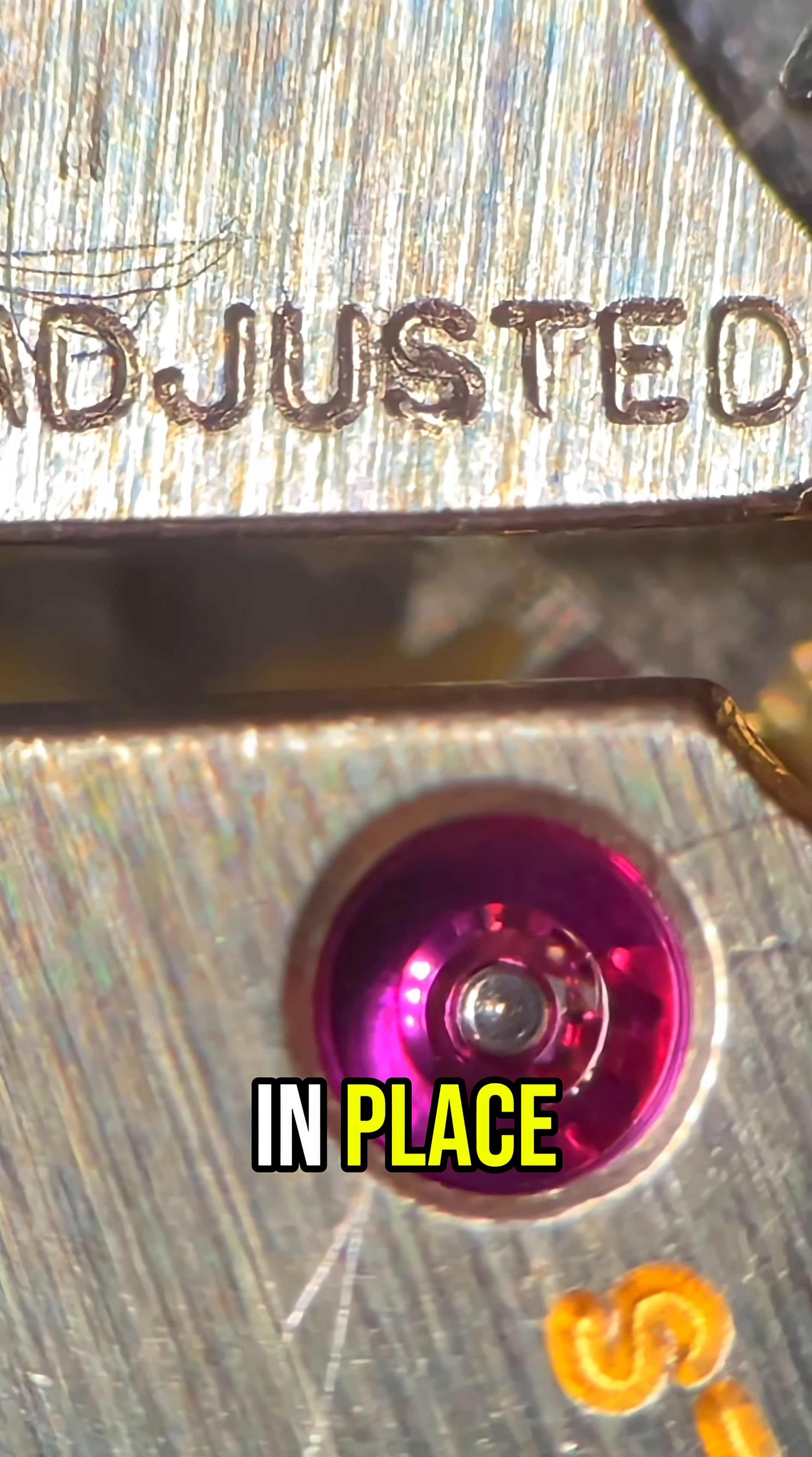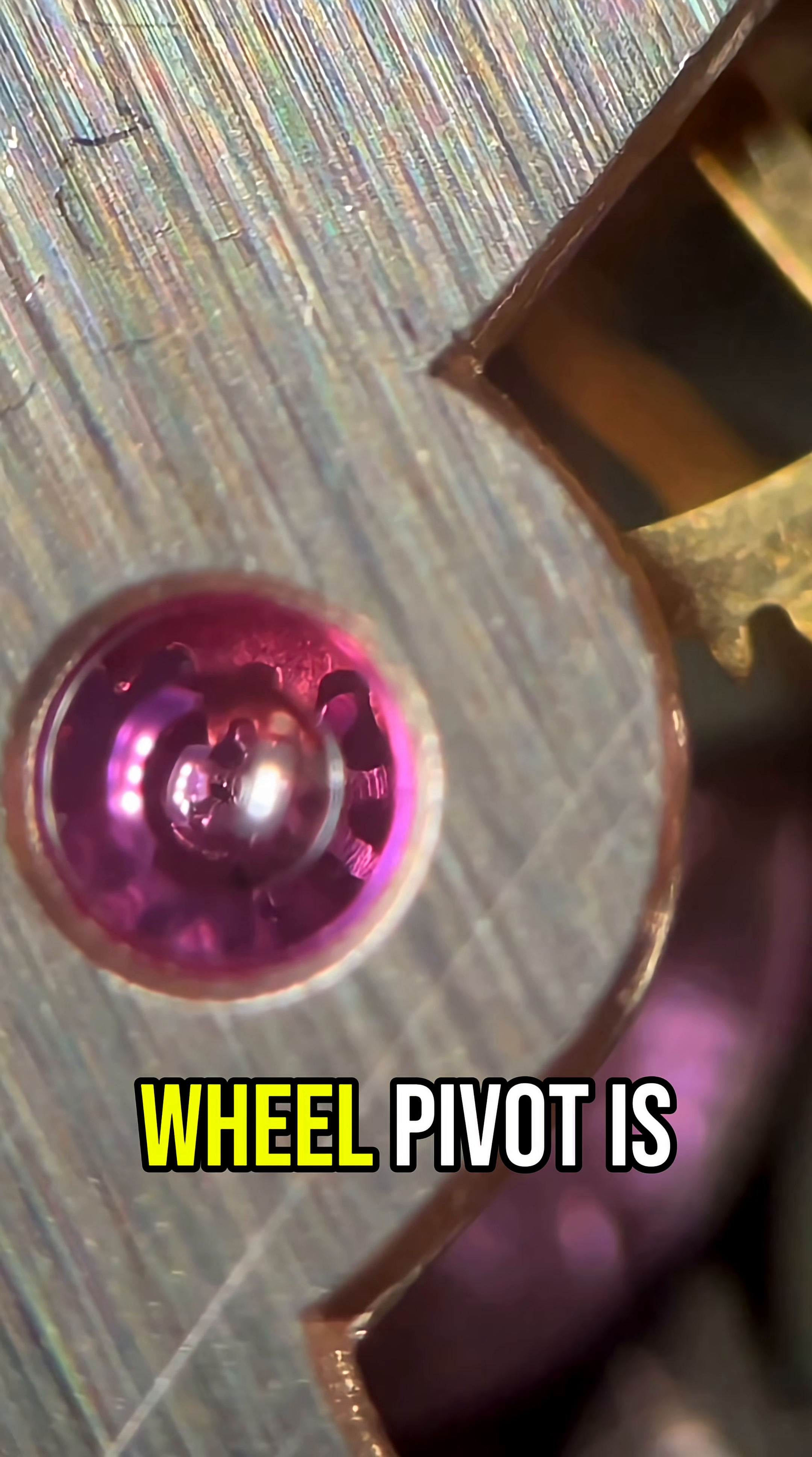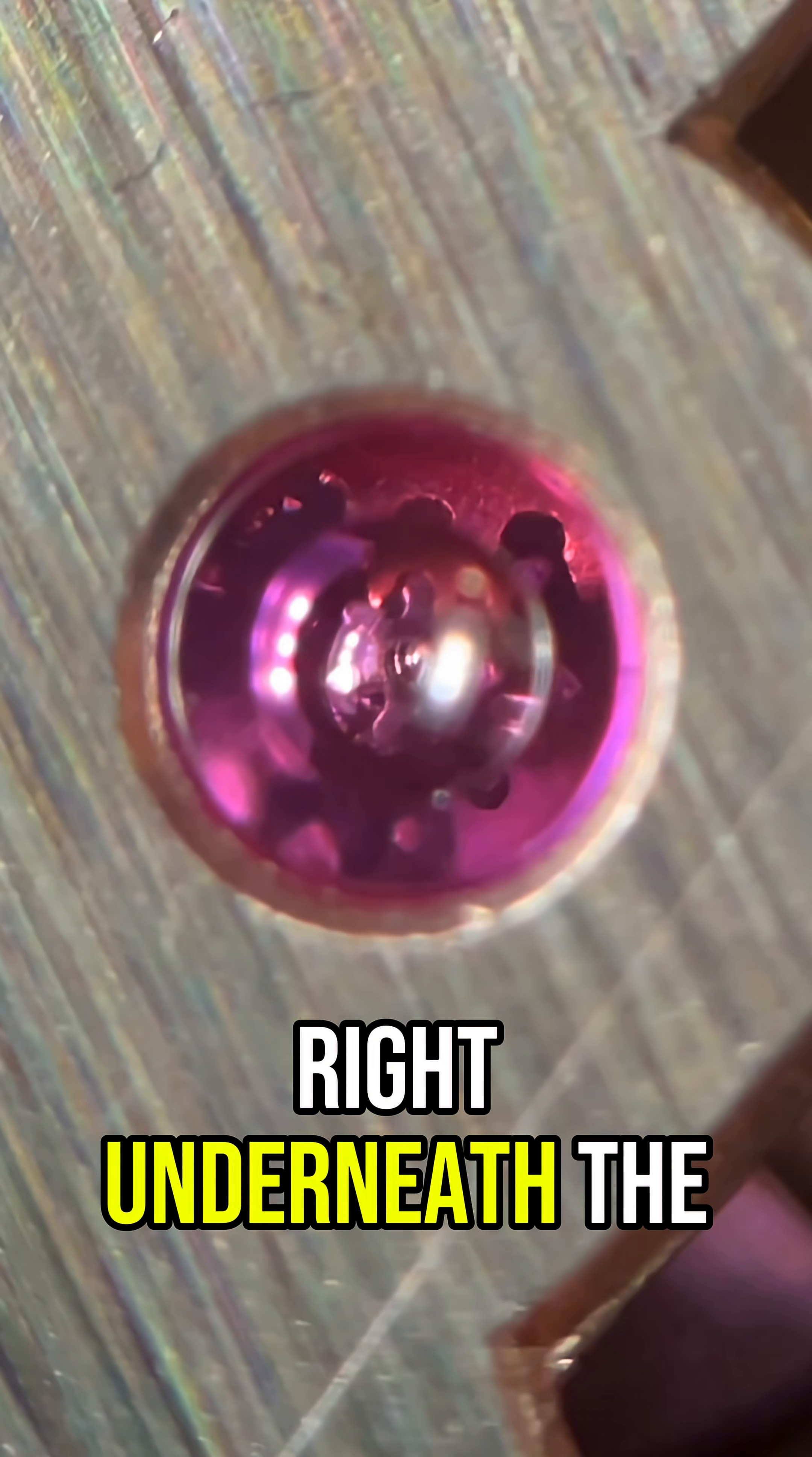Okay, the intermediate wheel pivot is in place, the third wheel pivot is in place, sweep second wheel pivot is in place as well but the escape wheel pivot is not. So with the thinnest tweezers I have let's try to grab that pivot and place it right underneath the wheel. Okay great.